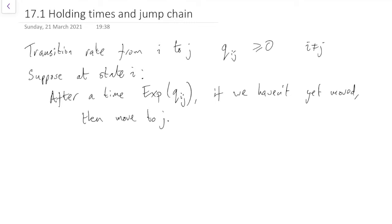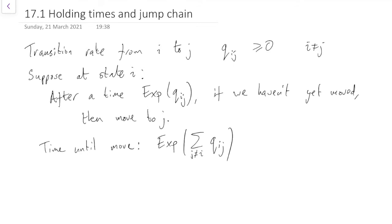When does the first alarm clock go off? That is, what is the time until we make a move? The first alarm clock going off is the minimum of a bunch of exponentials. From the theorem about the minimum of exponentials, it's exponential with the rate being the sum of the rates. So the time until we move is exponential with rate equal to the sum of all the q_ij's, and we'll call that q_i.